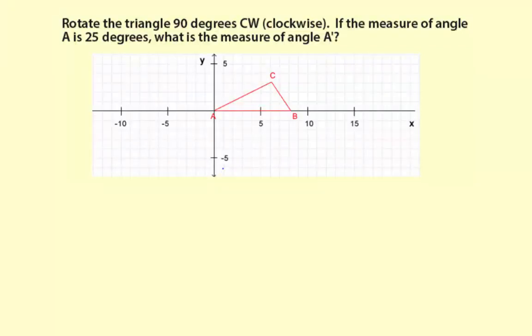Rotate the triangle 90 degrees clockwise. If the measure of angle A is 25 degrees, what's the measure of angle A prime?